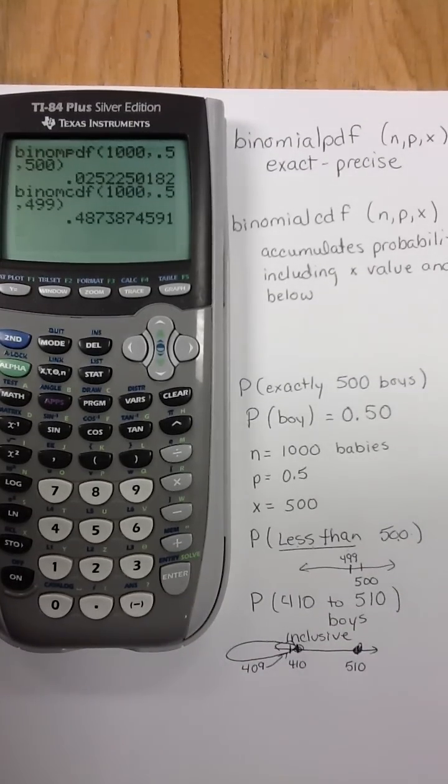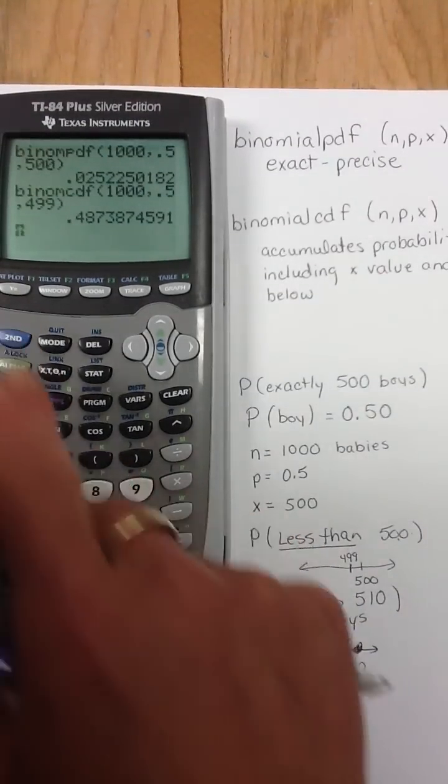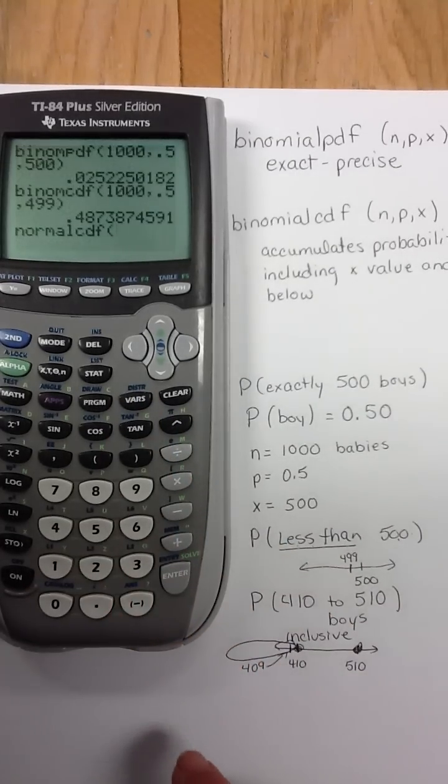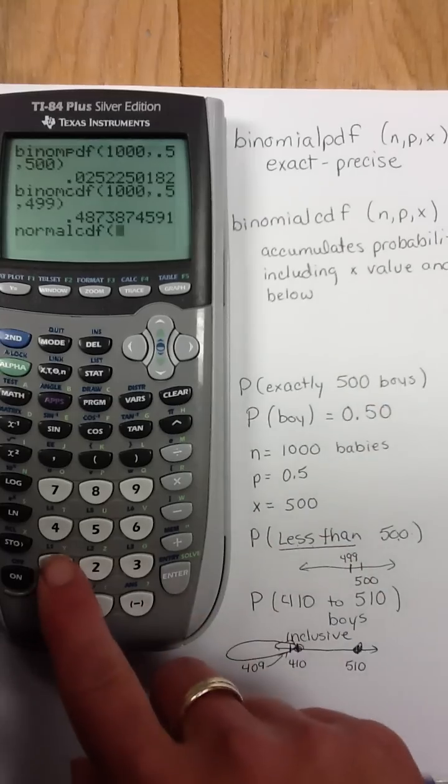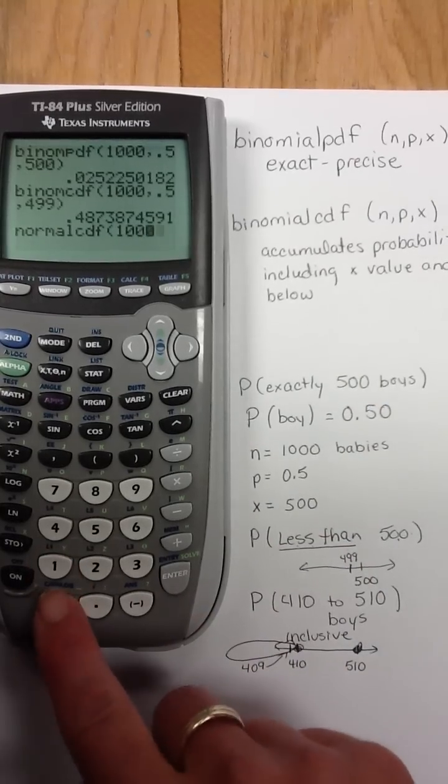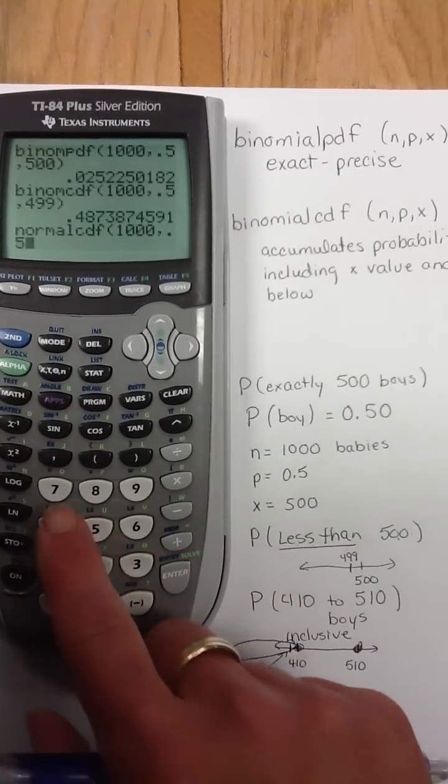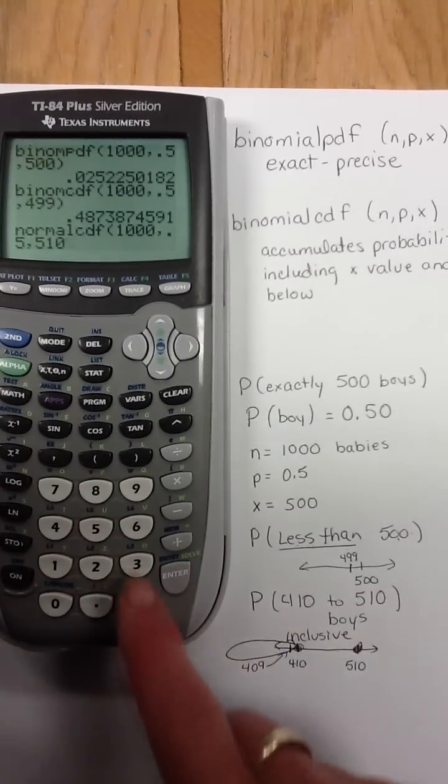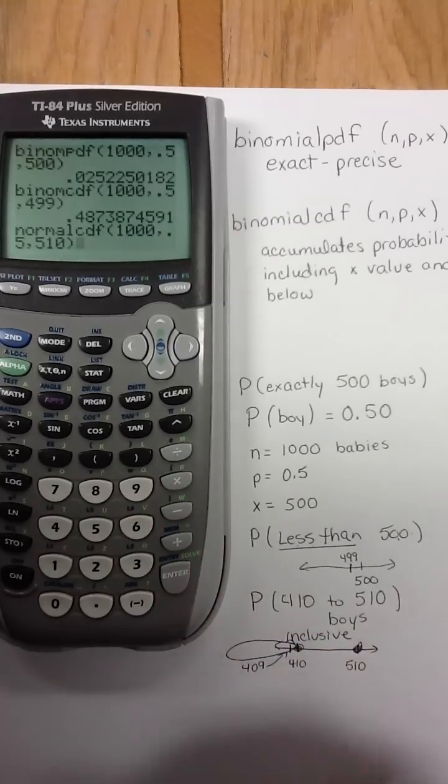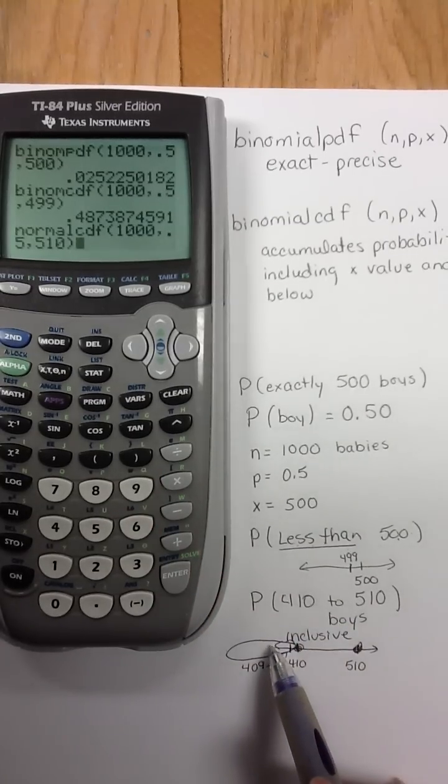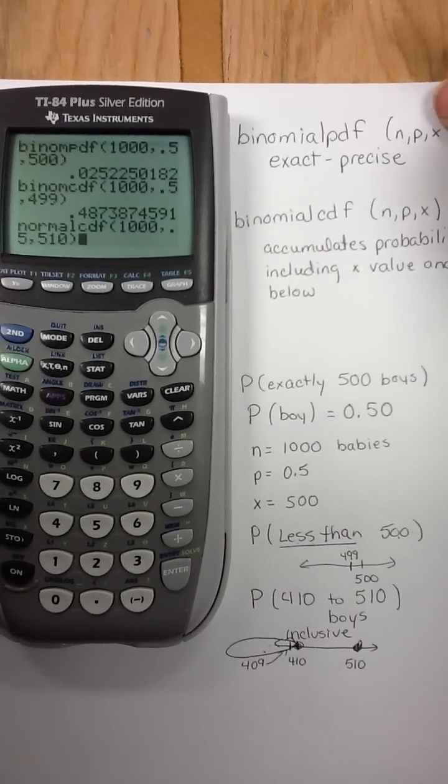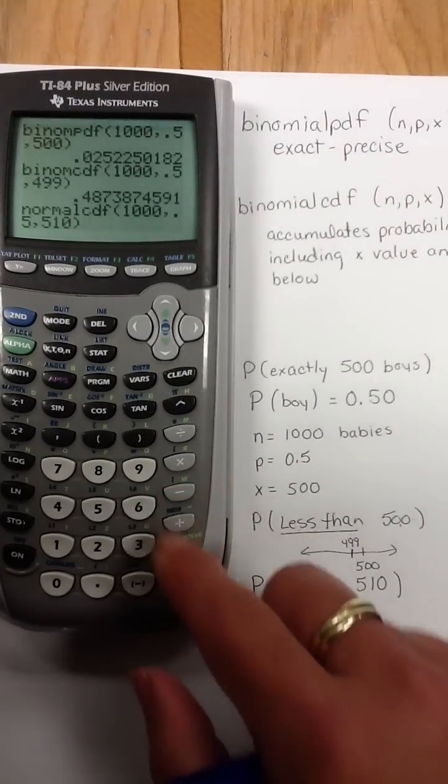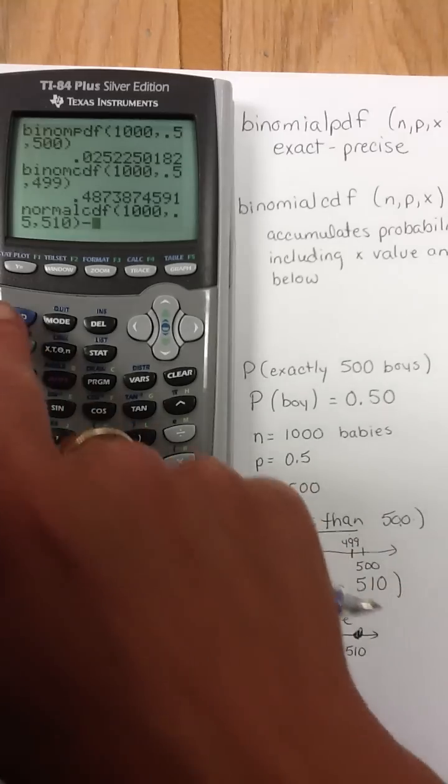So, what I'm going to end up doing on my calculator is going to my distribution function, hitting my cumulative. Everything's pretty much the same here at the beginning. 1000, 0.5, and I'm starting with 510 and that's included, so I'm putting that number in. And now, I'm going to subtract off this part that is missing down here, the 409 on down.